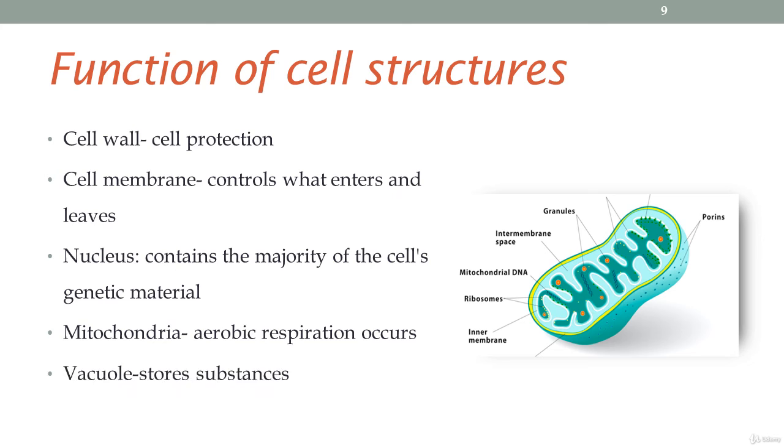Next, we have the vacuole. The vacuole stores waste products and nutrients. Plant cells usually have a very large permanent vacuole, whereas animal cells have temporary small vacuoles.